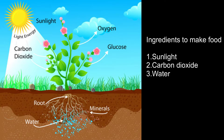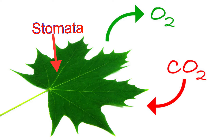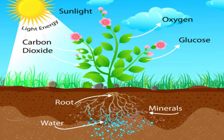These ingredients are carbon dioxide and water. This process of photosynthesis takes place in the leaves. Leaves have small pores called stomata, through which carbon dioxide from air passes. Water is absorbed from the roots and reaches the leaves through vessels in the stem.